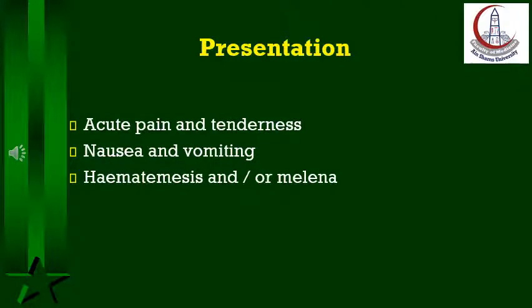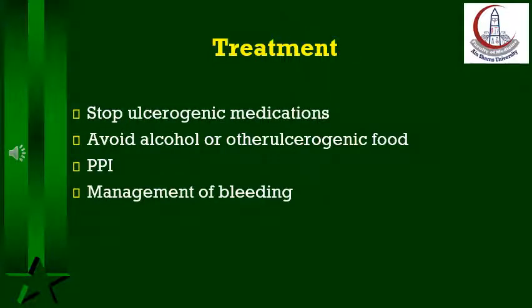Clinical presentation is by acute pain and tenderness in the epigastric region. Nausea and vomiting can be present. Hematemesis can occur and be massive. Diagnosis is confirmed by upper endoscopy. The treatment includes stopping the offending drug or agent.